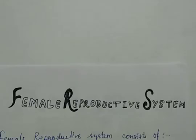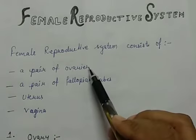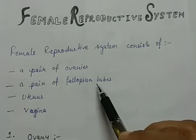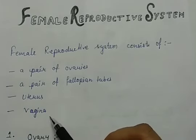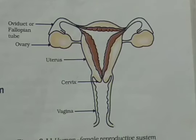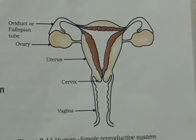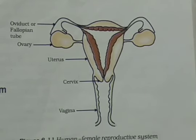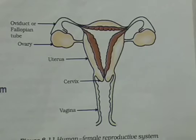So let us begin with the female reproductive system today. The female reproductive system consists of a pair of ovaries, a pair of fallopian tubes, uterus, and vagina. Here I have the female reproductive system in front of you from humans, and it is also from your NCERT at page number 137, figure number 8.11.